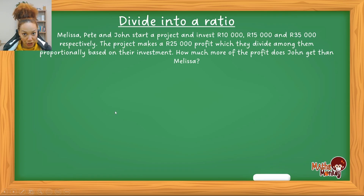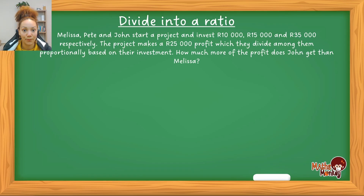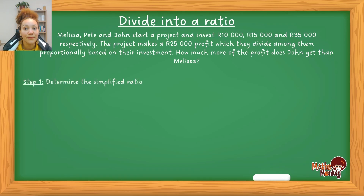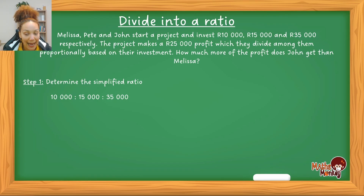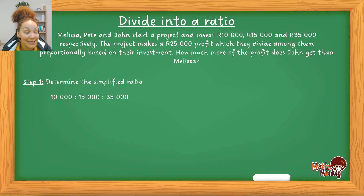To answer a 'divide into a ratio' question, start by finding the simplified ratio. Write the ratio in the given order: 10 000 : 15 000 : 35 000. The biggest number that divides into all three is 5 000. Dividing each by 5 000 gives the simplified ratio: 2 : 3 : 7.